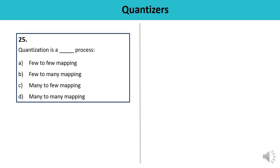Question 25: Quantization is a — few-to-few mapping, few-to-many mapping, many-to-few mapping, or many-to-many mapping process? Quantization is a many-to-few mapping process: from many levels, you pick among few output levels. The answer is C — confirmed correct.